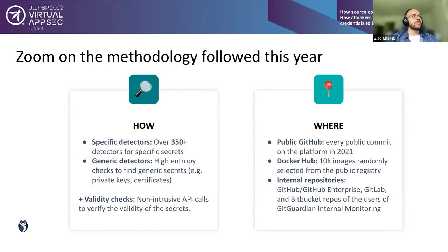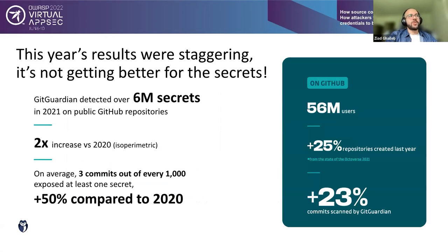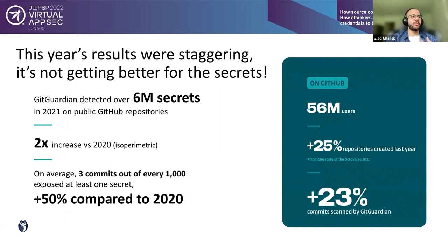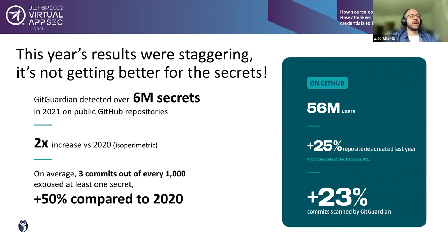The results were staggering — this year was worse than the previous one. GitGuardian detected over 6 million secrets on public GitHub repositories, a two-fold increase versus the previous year on the same perimeter. Looking at the new perimeter with new detectors, it was actually a three-times increase. The detector library grew from 250 to 350 detectors over the year.